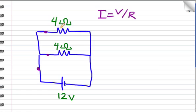I'll look at this top resistor first. Its voltage is 12, because it gets the full voltage of the battery, and its resistance is 4. So the current in this branch is 3 amps.